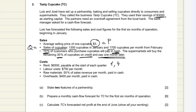So in month one, in January and in April, labor costs are $750. That's 50% of sales revenue per month. I'm highlighting the fact that it's sales revenue that we need to calculate it from, and overheads are $400 per month.